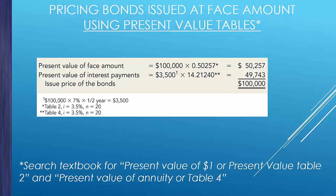You can find the same information using present value tables at the back of your textbook. Look up the present value of a dollar table, find the row for 20 periods, roll across to the 7% interest rate column to get the factor. There's also an annuity factor for the interest payments. You'll arrive at the same numbers — personally I prefer Excel.